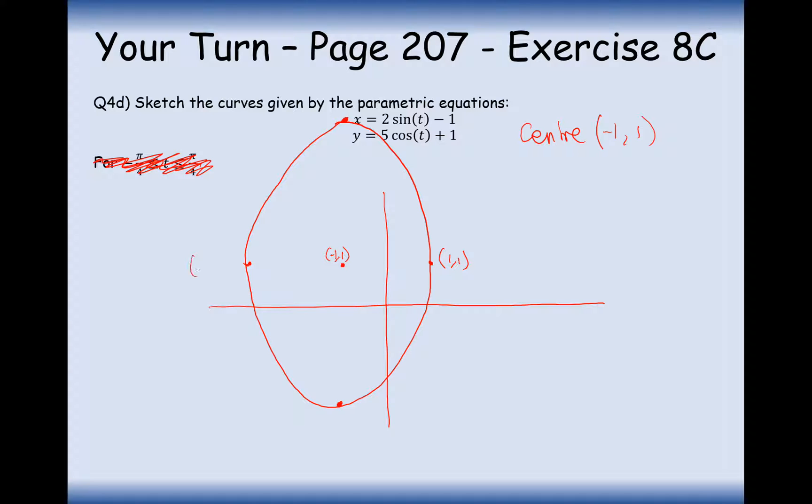We have four points. We worked them out earlier. They were 1, 1. This one was minus 3, 1. This one was 5 down, so it's going to be at minus 1, minus 4. And this was 5 up, so it's going to be at minus 1, 6.